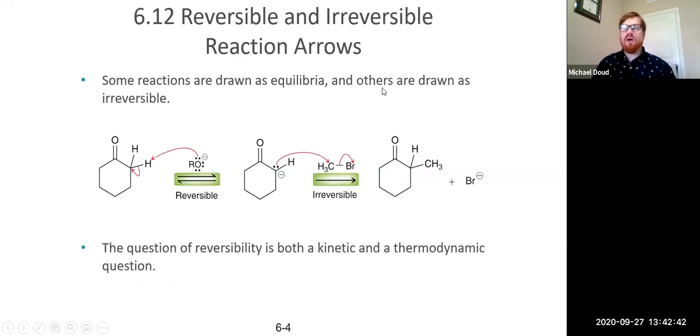Okay, now the last section of the chapter just talks about how do we know if these steps are reversible or irreversible? And we'll just go through some examples here for you. So sometimes when we draw individual steps, like here we have a proton transfer from our ketone here, our cyclic ketone, to an alkoxide, this proton transfer is reversible.